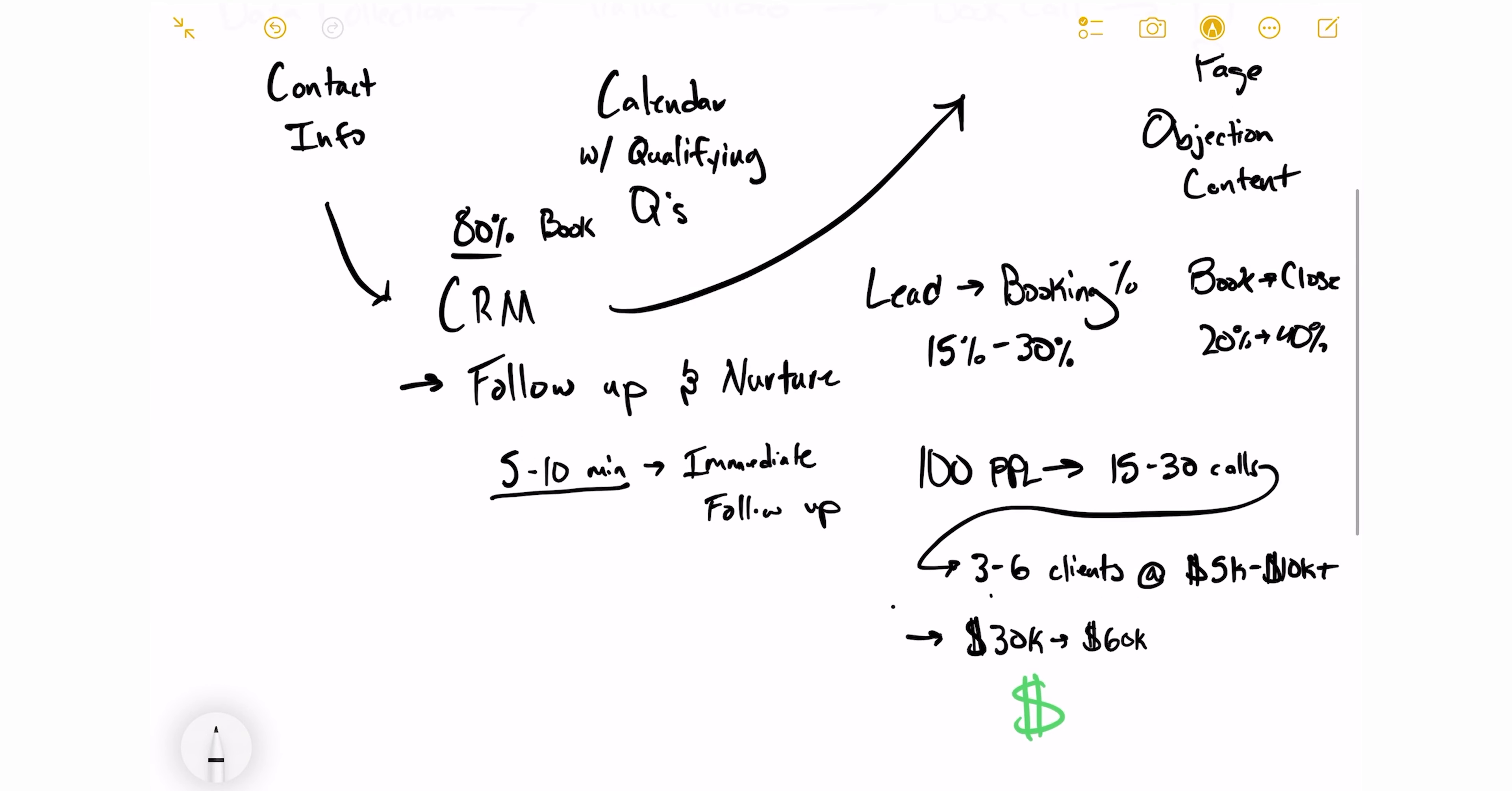And at the price points that we price you at, that's going to be five to 10K per client, which immediately turns into 30 to $60,000 in revenue. And so this is just taking the worst case percentages here, 15 and 20% for lead to booking and then booking to close ratio. So hopefully you can understand how, if you can pour a hundred people into this, you get 15 to 30 calls out and then that turns into three to six clients.